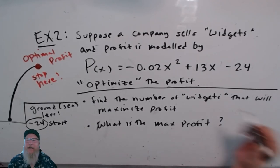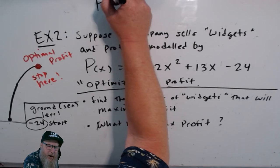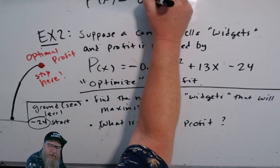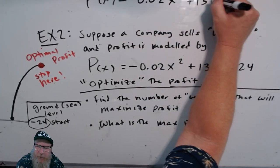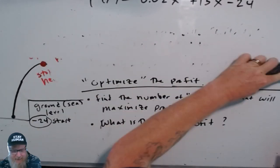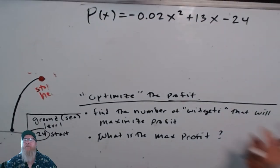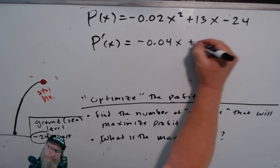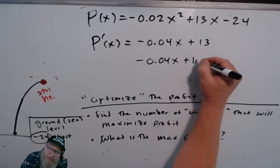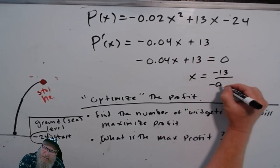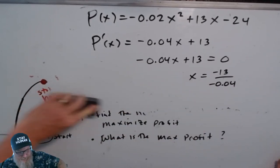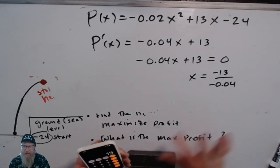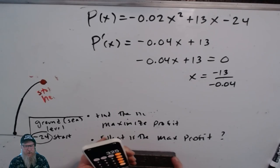So we have our profit function P(x) = -0.02x² + 13x - 24. We take the derivative: P'(x) = -0.04x + 13. We set it equal to zero. Subtracting 13 and dividing by -0.04 — negatives cancel — divided by 0.04 gives x = 325. So if we sell 325 widgets that's our optimal quantity.